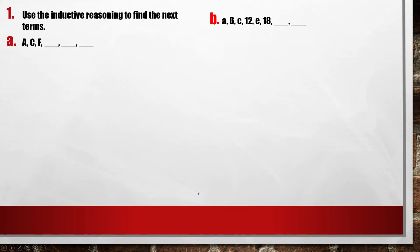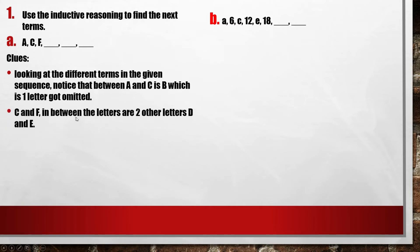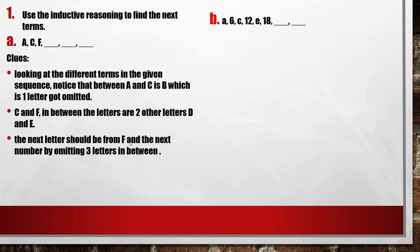Let's have this as our example: use inductive reasoning to find the next terms. Letter A: we have A, C, F, and then the next three terms which are vacant. Looking at the different terms in the given sequence, notice that between A and C is B, which is one letter that got omitted. So from A to C there is a letter in between.